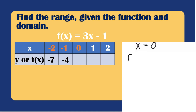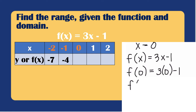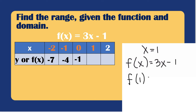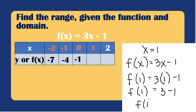If x = 0: f(0) = 3(0) − 1 = 0 − 1 = -1. If x = 1: f(1) = 3(1) − 1 = 3 − 1 = 2. So the value of f(x) when x = 0 is -1, and when x = 1 is 2.